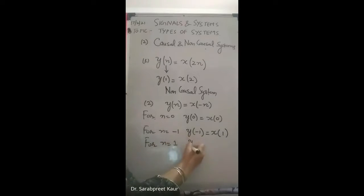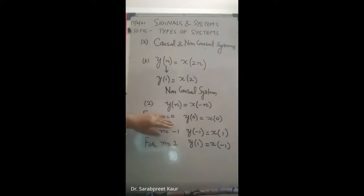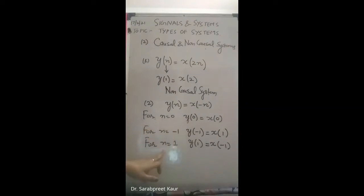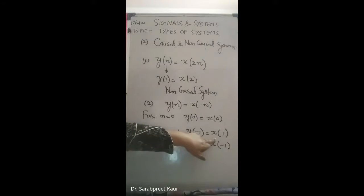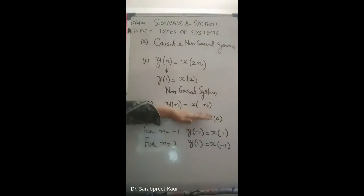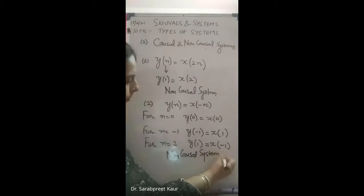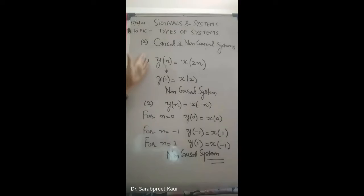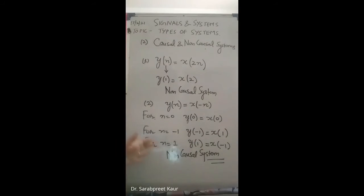For n = 1: y(1) = x(-2), which is a past input — that is okay. But for n = -1, the output depended on a future input. So you cannot check only one value; you must satisfy all values of n. Since for n = -1 the output depends on a future input, the system y(n) = x(-n) is a non-causal system. The concept should be clear — you should be able to analyze any system and determine whether it is causal or non-causal.